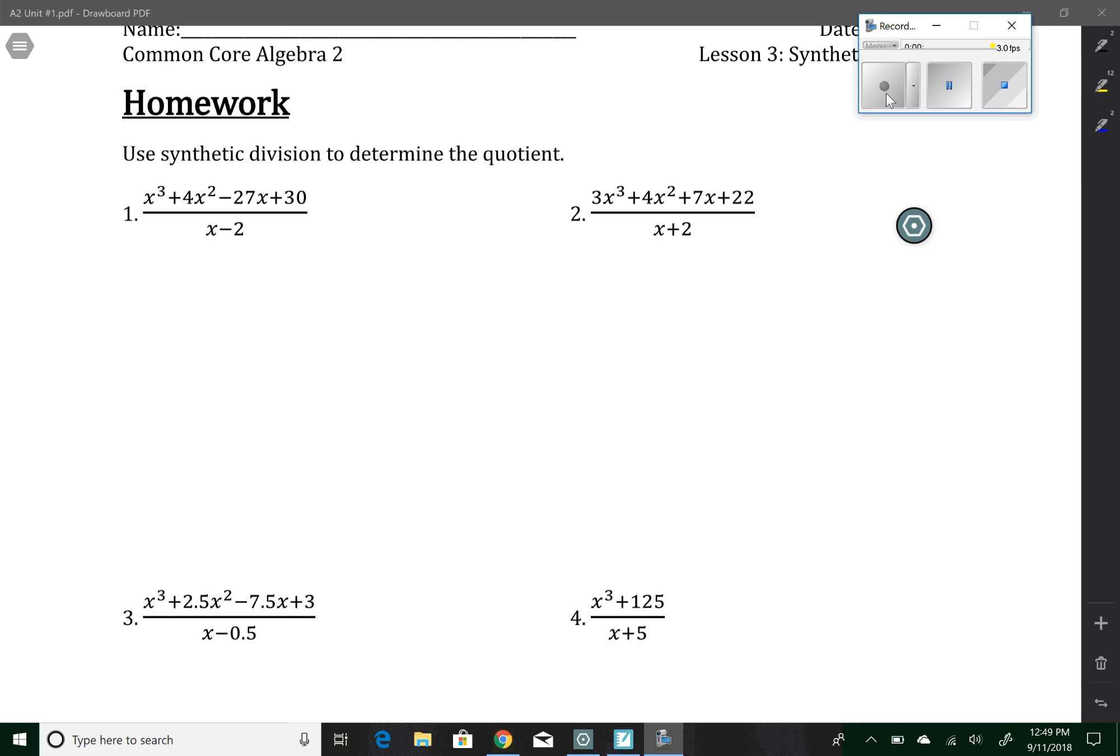So if I want to do synthetic division for this example, I'm going to start by figuring out what makes the divisor zero. So the x value that would make that zero would be two. Essentially, it's always the opposite of whatever's there because of what we're doing. Then I'm going to take the coefficients, which are one, four, negative 27, and 30, and put them on my first line.